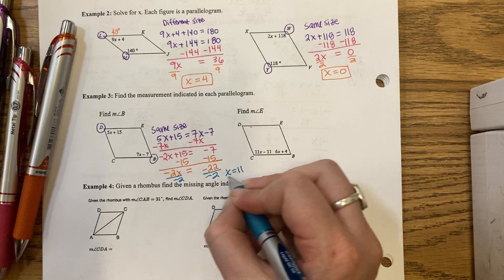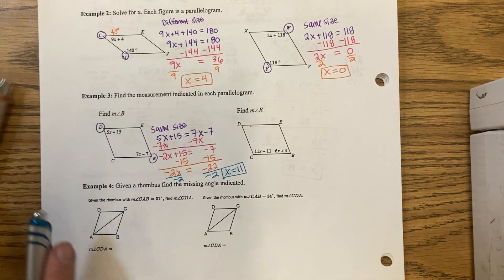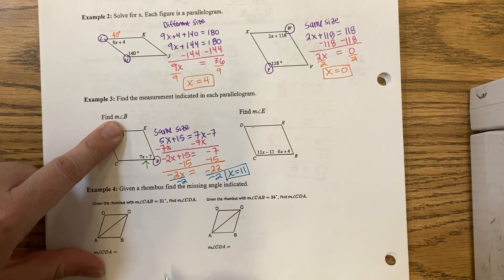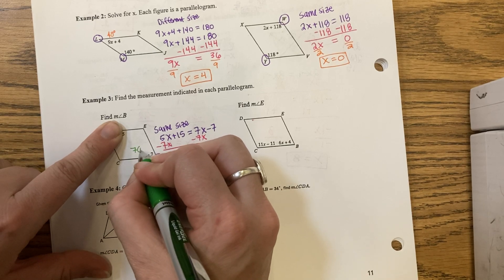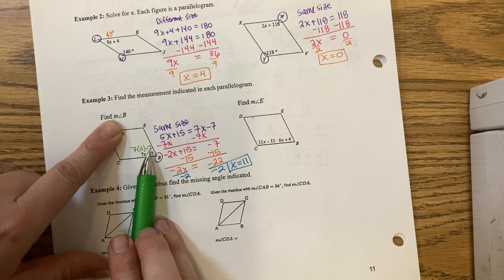They want me to find angle B. Angle B is here. 7 times 11 minus 7. 77 minus 7 is 70.